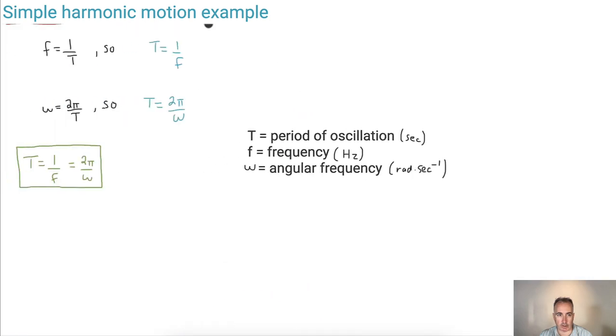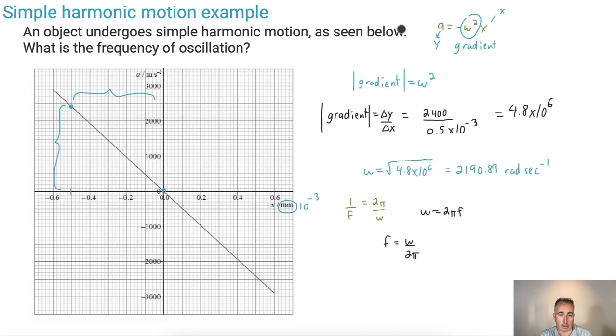You could have seen that from the original equation, but I think it's nice to start with the equation from your data booklet. So the frequency will just be this number, 2190.89. Remember, there's a lot more decimals going on here. I'll divide that by 2π.